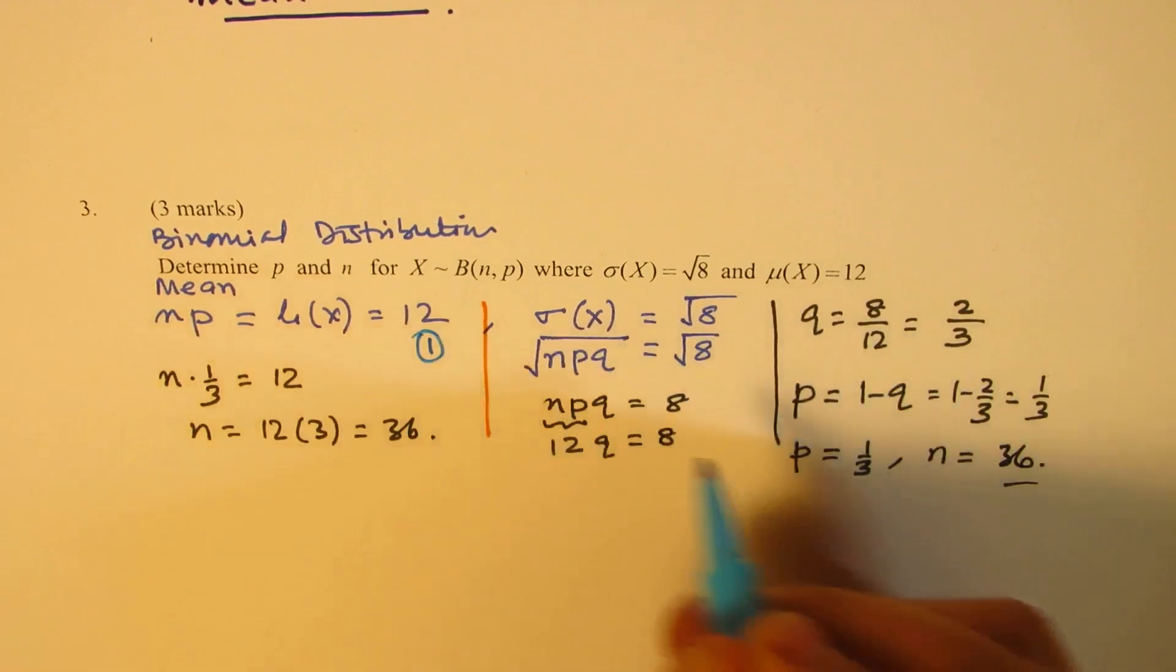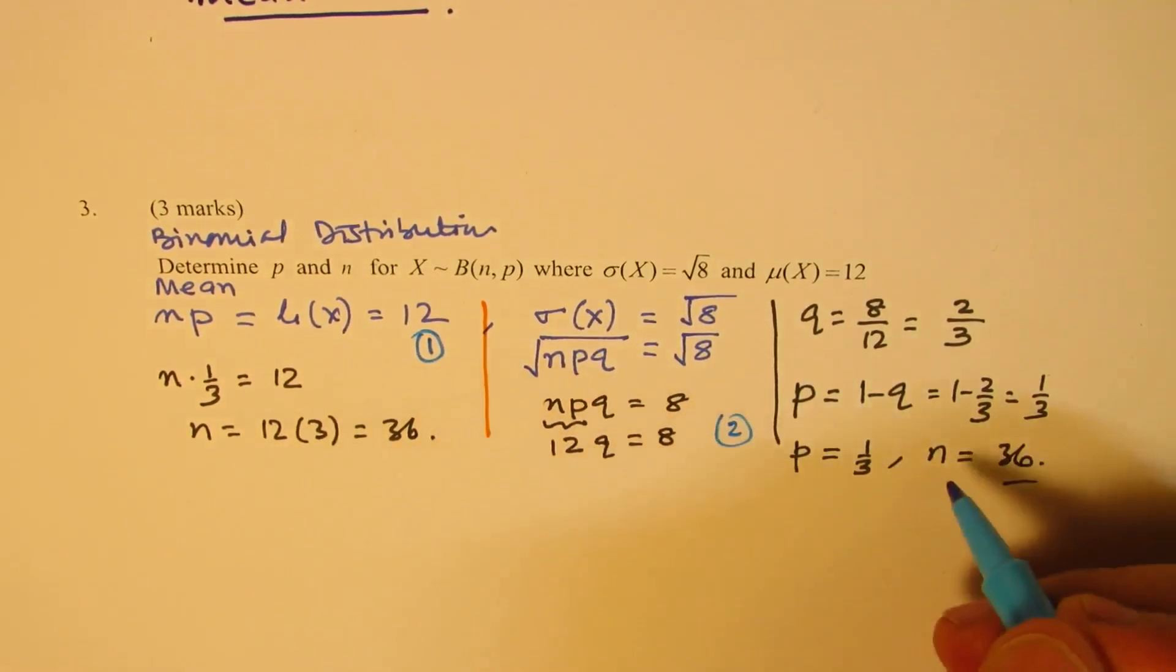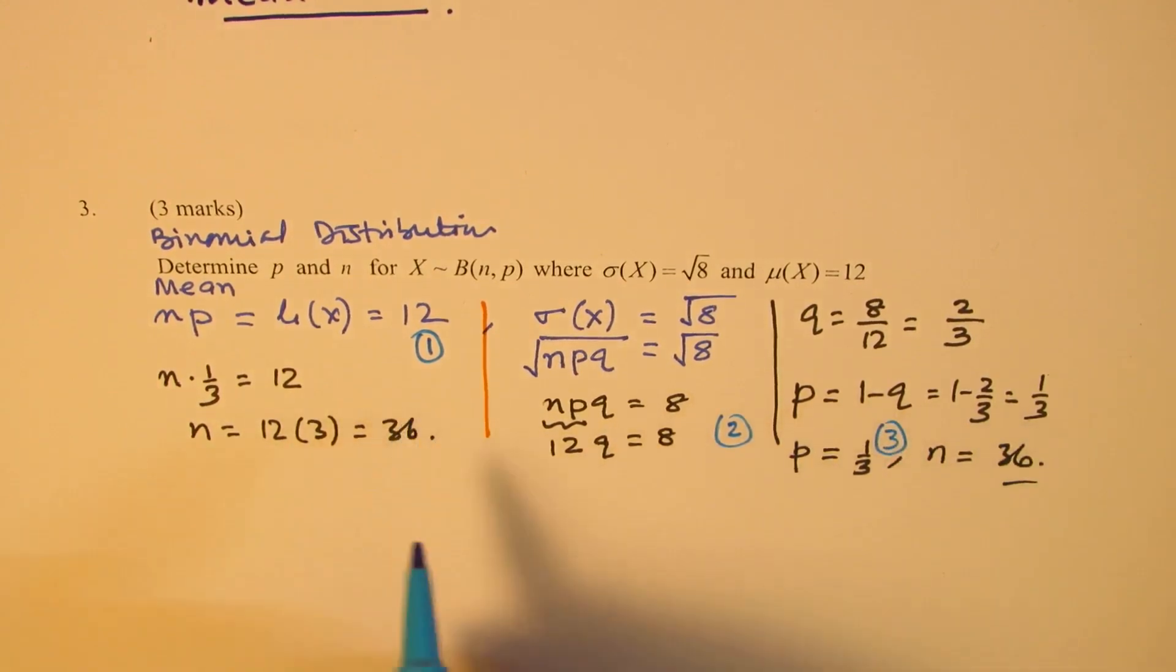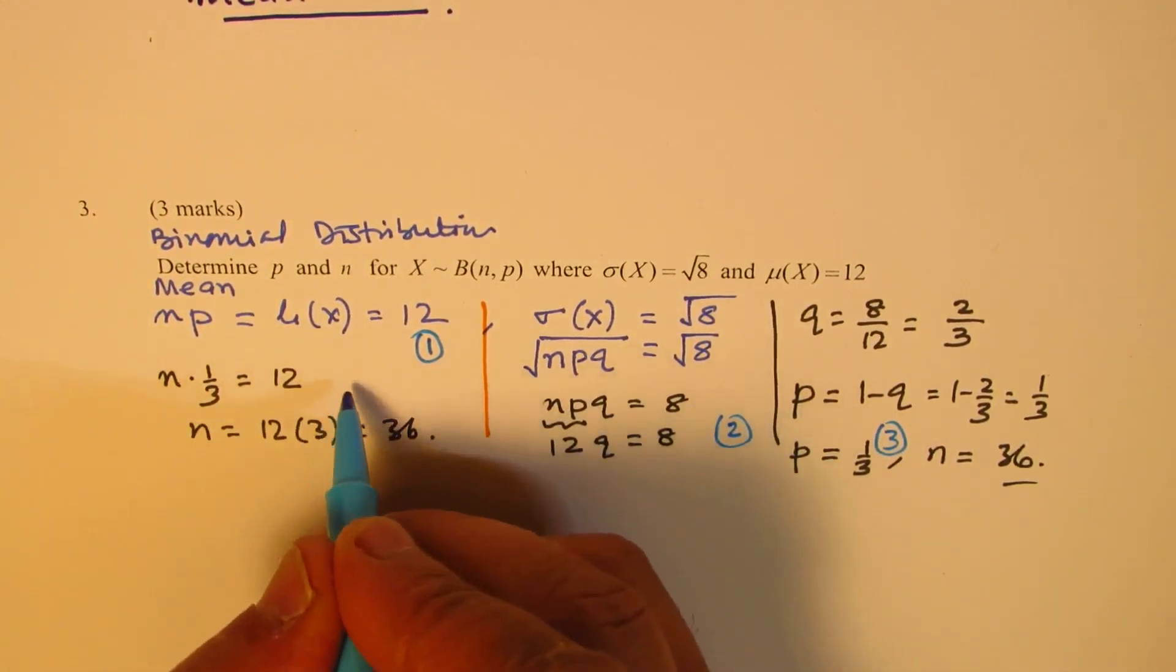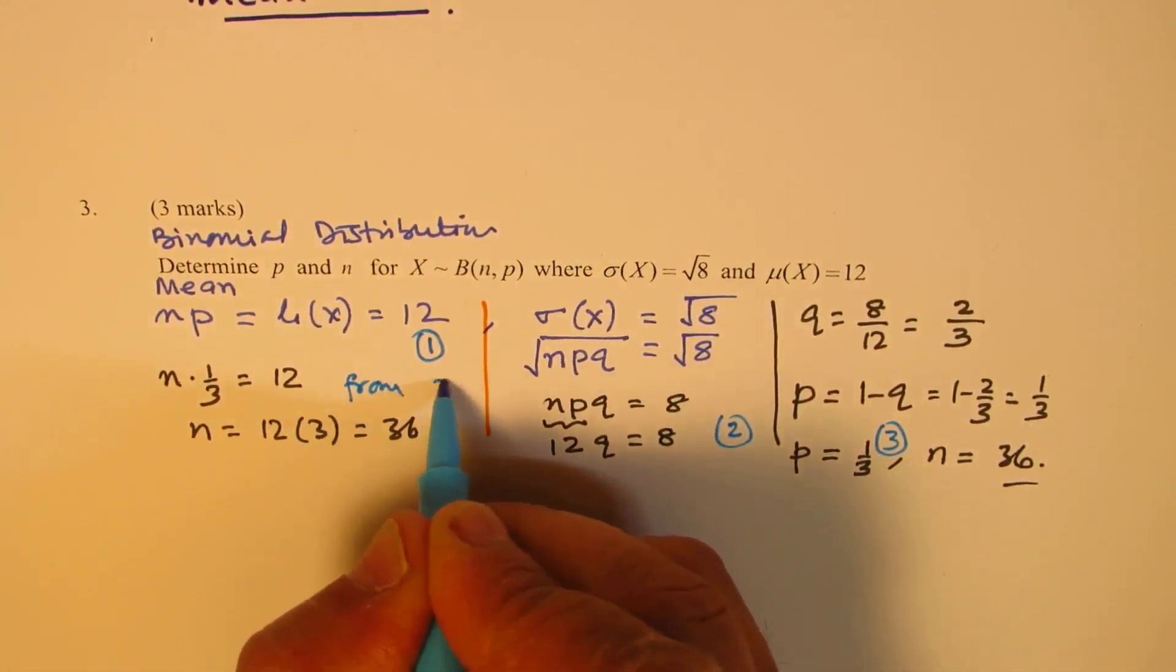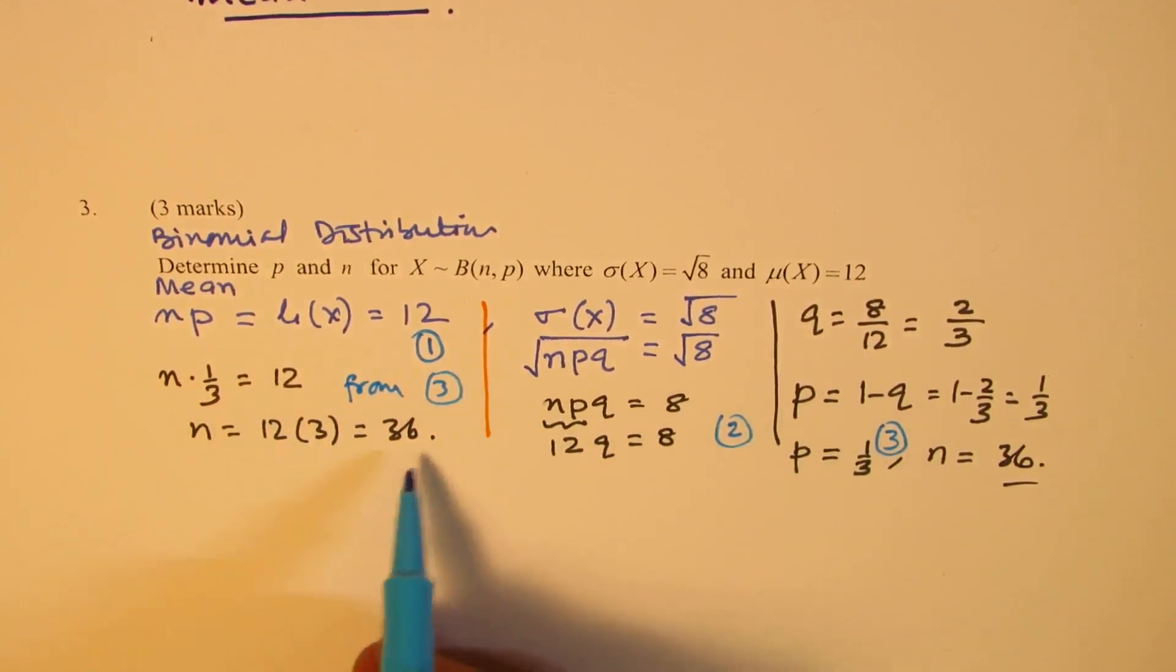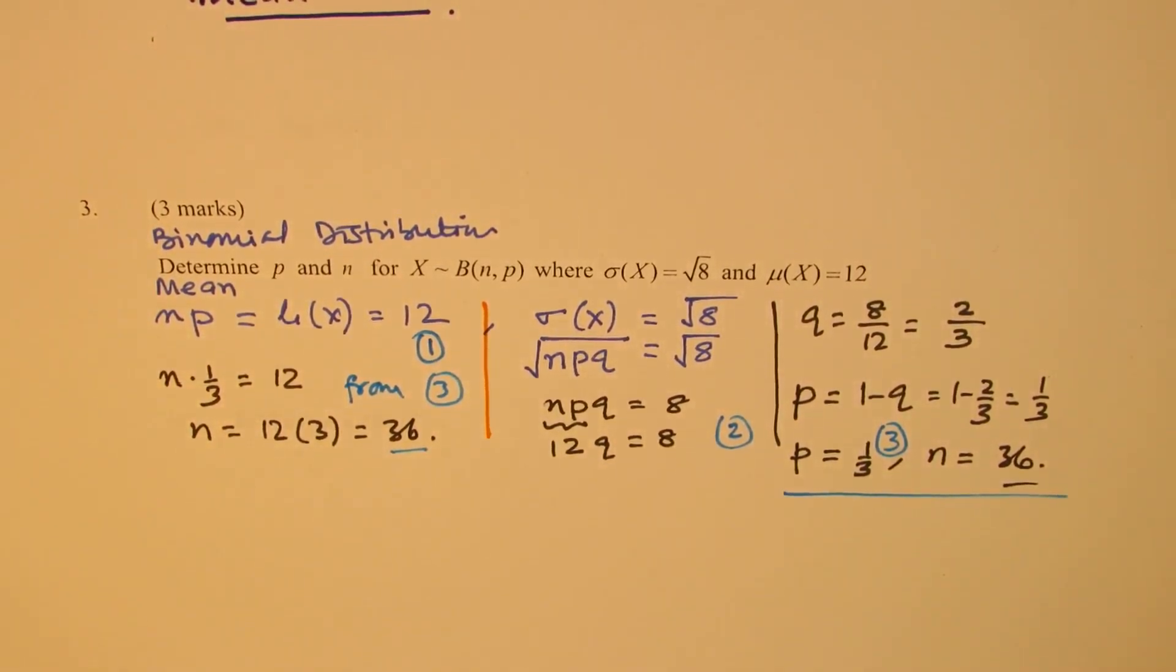Let me write this as our equation number 1, this is equation number 2. So first we find the value of P, and then here we substitute from equation 3 to get the value of N. That becomes our answer. Is that clear to you?